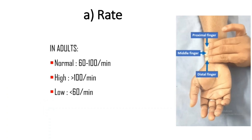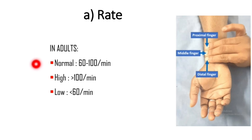We are going to assess the rate, which is nothing but feeling and counting the pulse for one minute. Normally in adults, it is 60 to 100 per minute. It is called high when it is greater than 100 per minute, and it is low when it is less than 60 per minute.